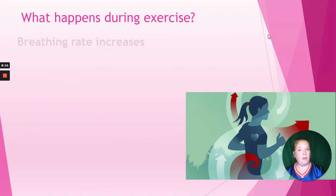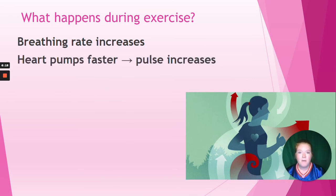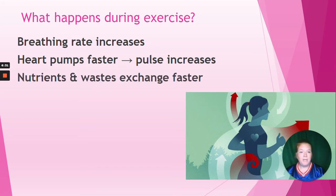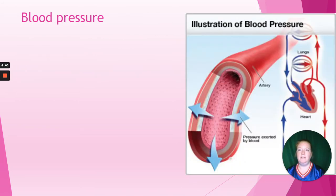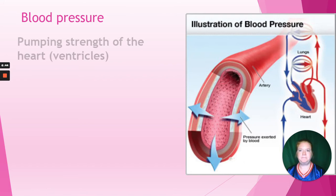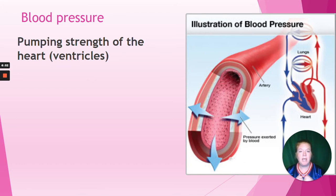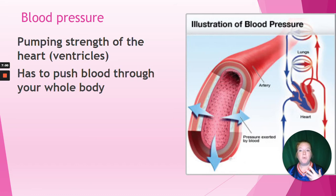What happens during exercise? Our breathing rate increases to bring more oxygen, our heart pumps faster, and our pulse rate increases. The nutrients and waste have to exchange faster - bring more oxygen, get rid of more carbon dioxide, bring more nutrients, get rid of more waste. Blood pressure is the pumping strength of the heart or the ventricles. The heart squeezes and pushes blood, and that force pushes against the walls of arteries - that's what we measure as blood pressure. We want it strong enough to push blood through the whole body, but not so strong that it stresses those artery walls.